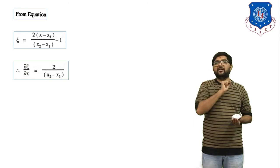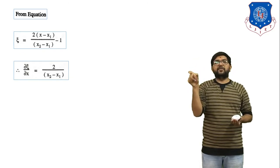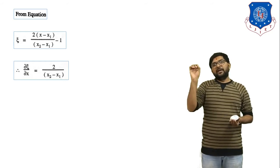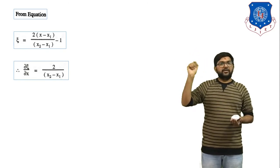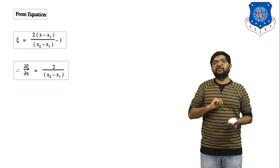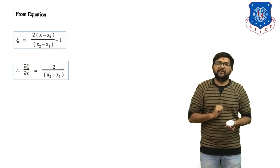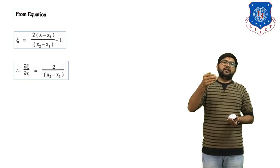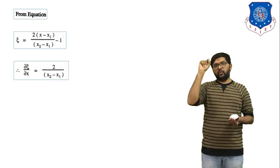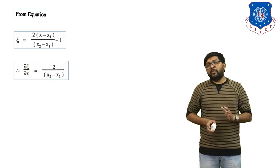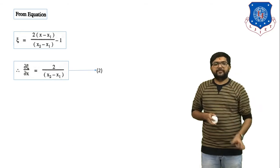Since x2 and x1 are constants, we differentiate only x, and the derivative of x is 1. The term minus x1 is also constant, so its derivative is 0. Therefore, del zeta / del x equals 2 upon (x2 minus x1), where (x2 minus x1) indicates the length of the element. This is equation number 2.